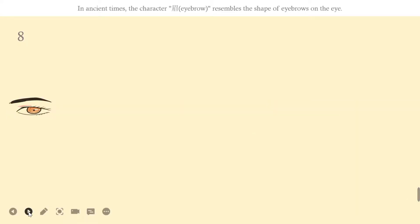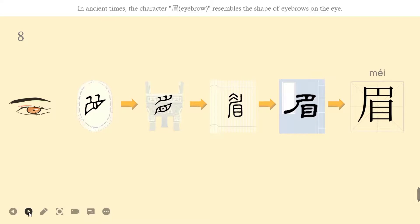Let's learn the eighth character, méi. In ancient times, the character méi resembles the shape of eyebrows on the eye. In the regular script it has two parts. The lower part represents mù, its meaning is eye, and the upper part represents where the eyebrows are.